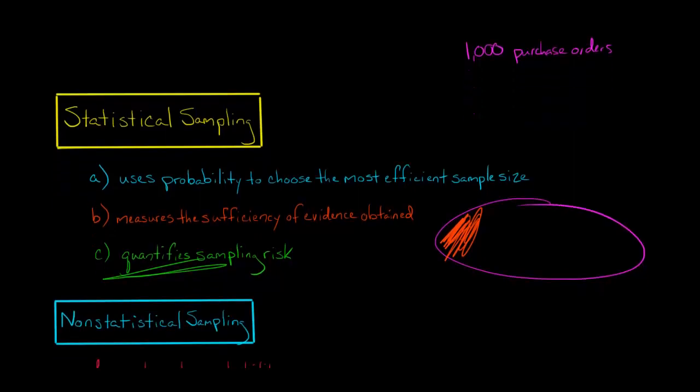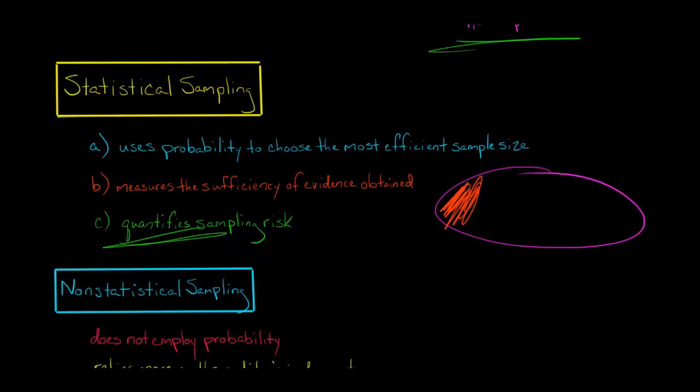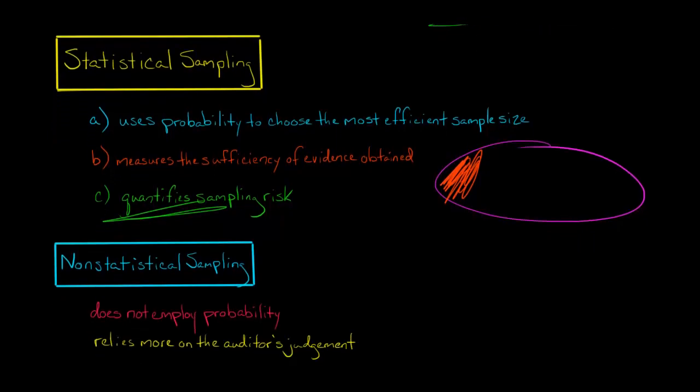When we use non-statistical sampling, let's again say we've got this example with 1,000 purchase orders. We're not going to be using probability. You might have the auditor say, look, you've got 1,000 purchase orders.